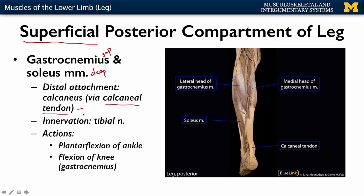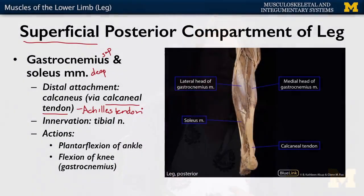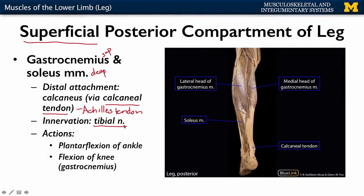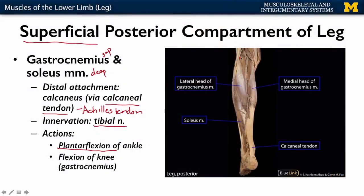The calcaneal tendon is what we all know as the Achilles tendon - the strongest tendon in the body. Damage to the calcaneal tendon can have devastating effects on the ability to plantar flex the foot or even simply walk. These muscles are innervated by the tibial nerve, one of the terminal branches of the sciatic. They are the main plantar flexors of the ankle. Additionally, the gastrocnemius extends up past the knee joint, so it also plays a role in flexion of the knee.